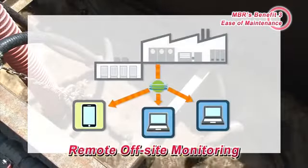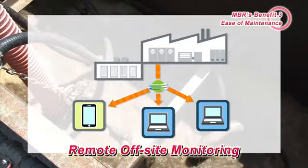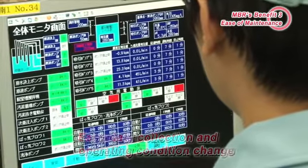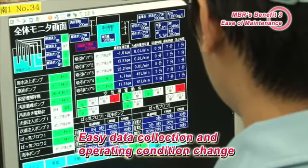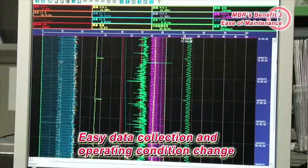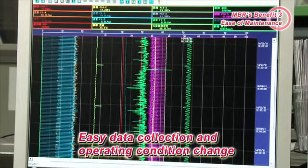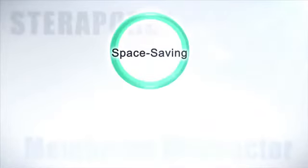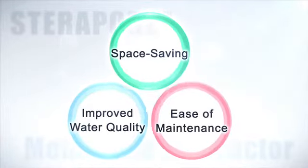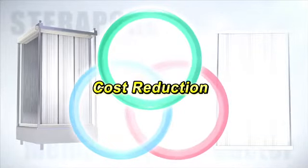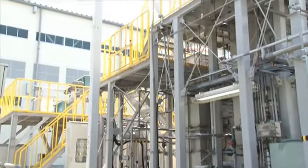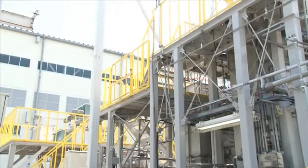Since remote monitoring is possible, there is not necessarily a need for monitoring within the plant. Using a remote monitoring system, operating conditions can be changed and various data can be acquired, such as membrane suction pump pressure and amounts of treated water. Space saving, improved water quality, and ease of maintenance — these three benefits combine to make cost reduction possible. MBR is an environmentally and economically sensible water treatment system.